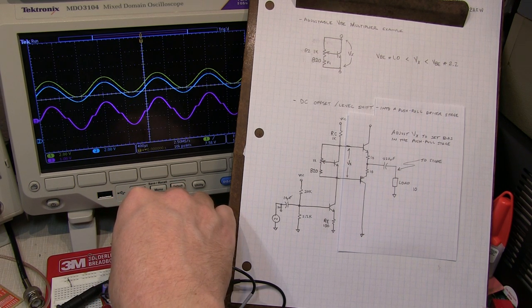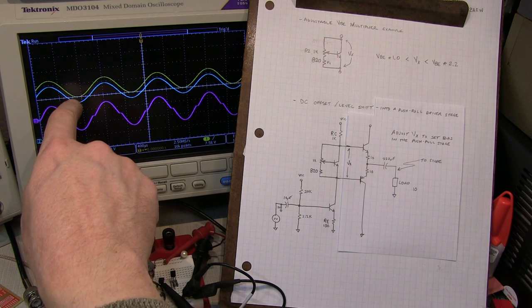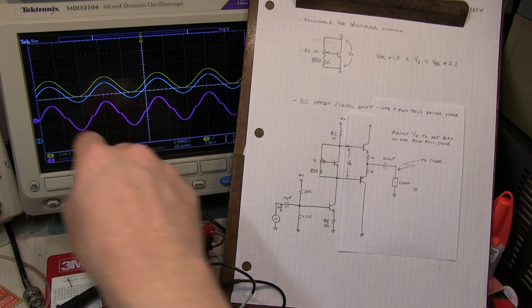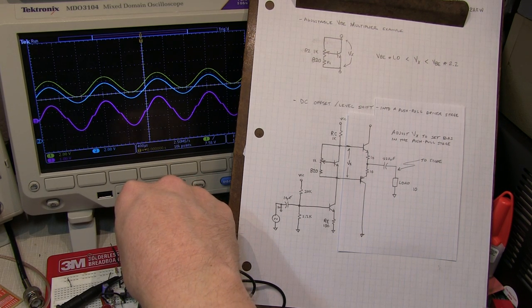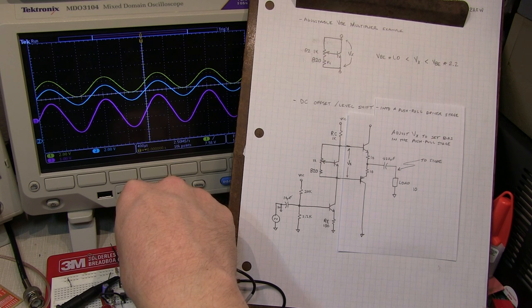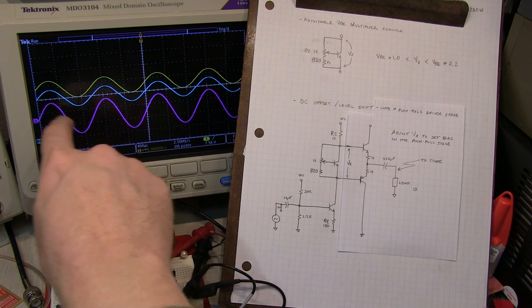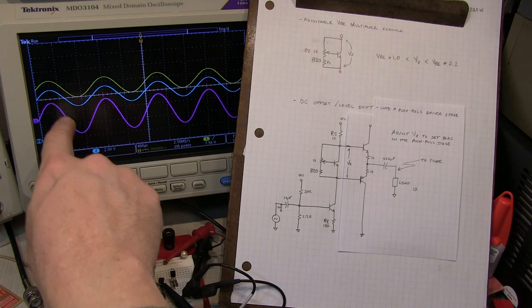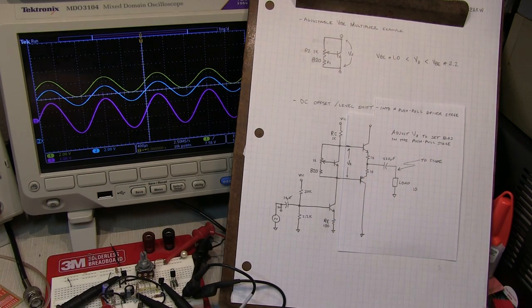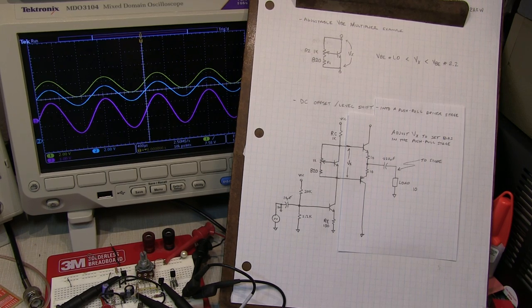So as I turn that pot up, we can actually see the voltages here separating and the crossover distortion beginning to go away. And that's the proper way to kind of set up a voltage drop, or excuse me, the voltage bias on this output stage to minimize distortion. And you can actually hear that. So let's hook up a speaker and listen to it.